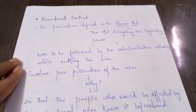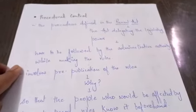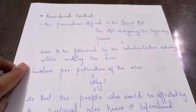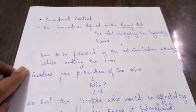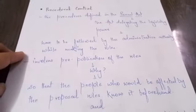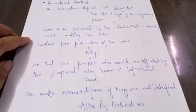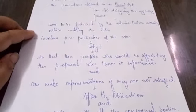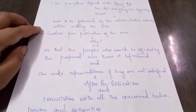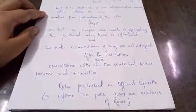Let's move on to procedural control. Procedural control means that the procedure defined in the parent act — the act that delegates the legislative power — has to be followed by the administrative authority while making the rules. It involves pre-publication of the rules, so that the people who would be affected by the proposed rules know them beforehand and can make representations if they are not satisfied. After pre-publication and consultation with the concerned bodies, persons, and authorities, the rules are published in the official gazette to inform the public about the existence of the rules.